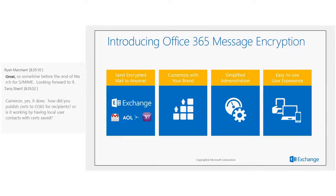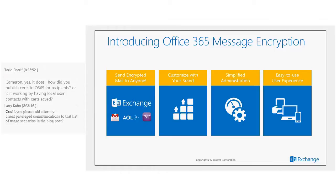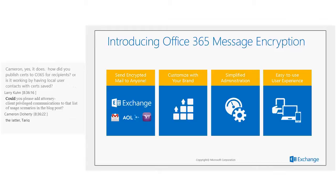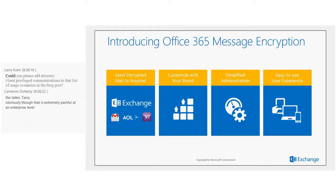There are four top pillars for the new offering. The first pillar is that the service allows you to send encrypted mail to anyone — literally anyone. It doesn't matter what the recipient's domain is. They could be on Gmail, Exchange, AOL, Yahoo, Squirrel, or any other email service. Regardless of their SMTP domain, you can still send them encrypted email.